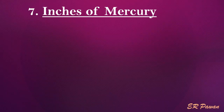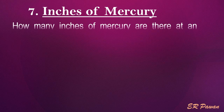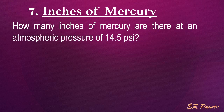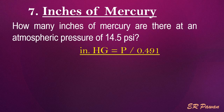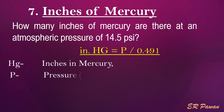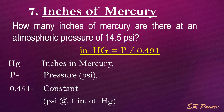Formula 7 — Inches of Mercury. How many inches of mercury are there at an atmospheric pressure of 14.5 pounds per square inch? HG equals pressure divided by 0.491. Where HG = inches of mercury, P = pressure in PSI, and 0.491 is a constant representing PSI at 1 inch of mercury. Let's put the value in the formula.